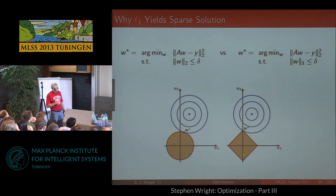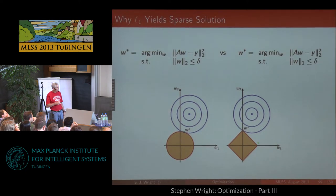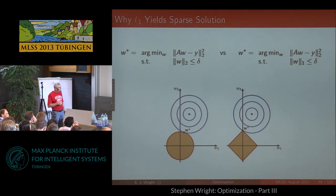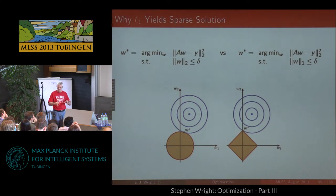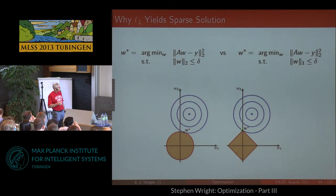If instead you use the L1 ball, the contours are diamonds. For the same objective, the minimizing point is at a corner of the diamond where the w1 component is zero. You can see that if you move the ellipsoidal contours around, probably more often than not the solution is at one of the four points of the diamond. In higher dimensions, the fraction of the time the solution lands at a corner or edge is much higher, giving you a sparse solution with only one non-zero component.